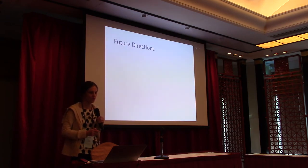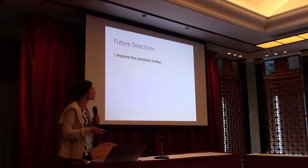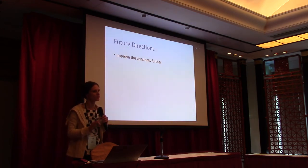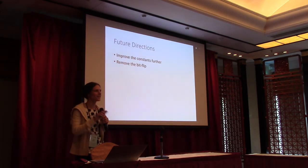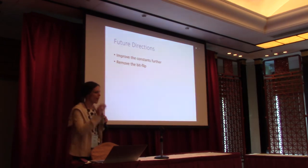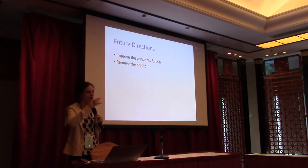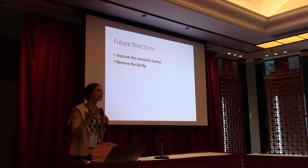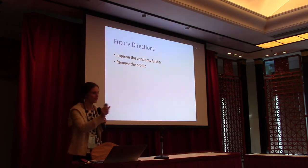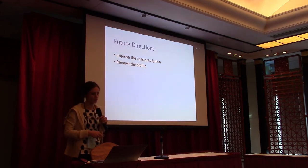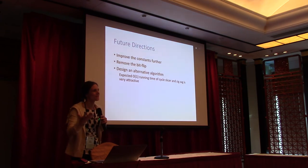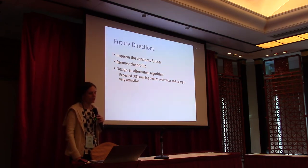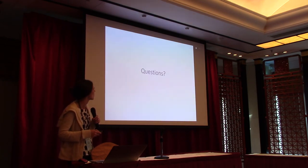In terms of future directions, a lot of this analysis yielded constant bounds that are definitely artifacts of the proof, not the actual algorithm. There's definitely improvement to be had there. Also, after we pick out our matching, we flip a bit for each edge to determine if we're keeping it — which is probably not necessary, but an artifact of the proof technique needing that extra bit of randomness for the coupling argument. At the end, it still leaves me personally rather unsatisfied, because the expected constant time from the zigzag algorithm and cycle walking is so appealing — it would be lovely to find a way to balance those two without having to take that worst case penalty.